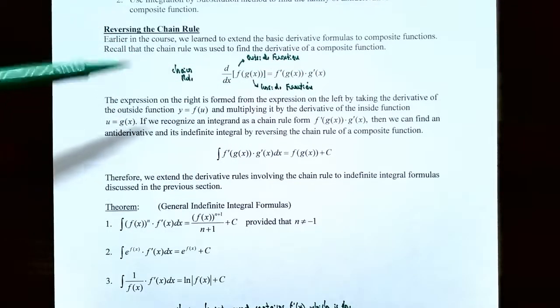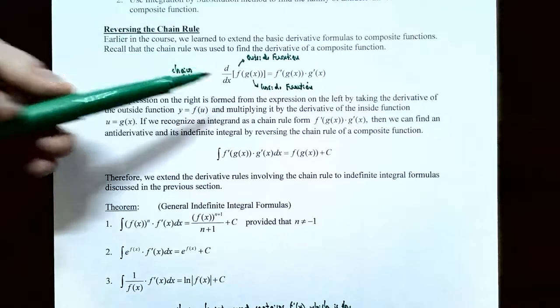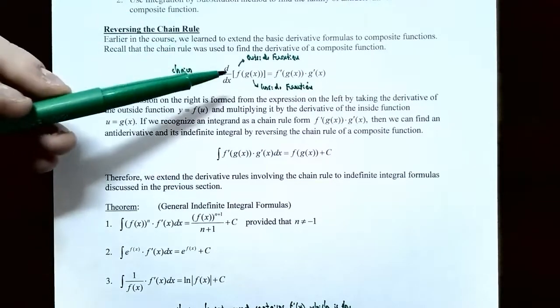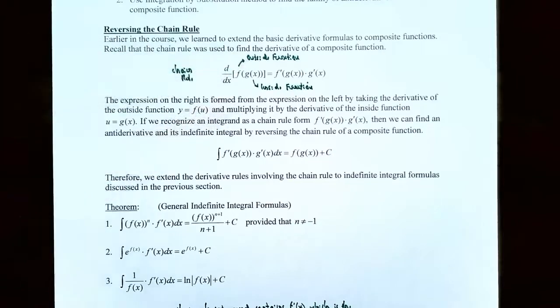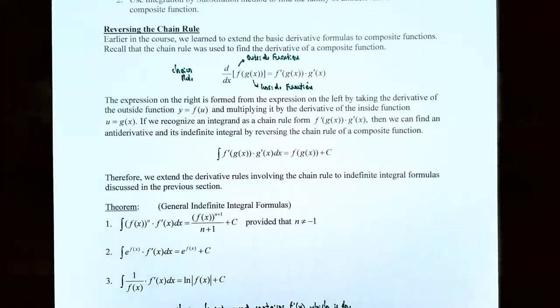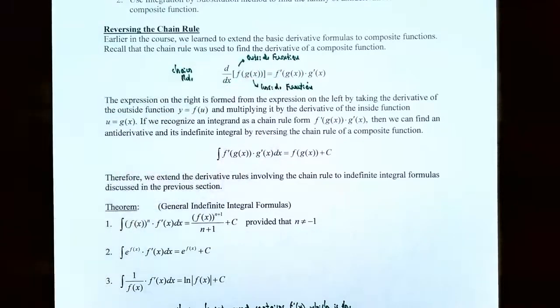The expression on the right is formed from the expression on the left by taking the derivative of the composite function. You take the derivative of the outside function, which is y equals f of u, and then you multiply by the derivative of the inside function, which is u equals g of x.